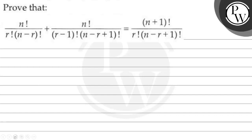Let us read the question. The question says: prove that n factorial upon r factorial multiplied by n minus r factorial, plus n factorial upon r minus 1 factorial multiplied by n minus r plus 1 factorial, is equal to n plus 1 factorial upon r factorial multiplied by n minus r plus 1 factorial.